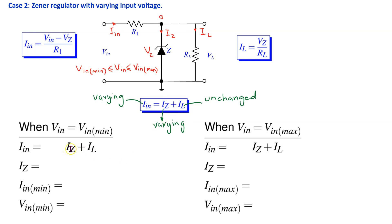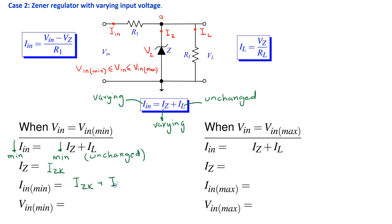To find VIN_minimum: when VIN is at its minimum, IIN is at its minimum. Since IL is unchanged, IZ is forced to its minimum value IZK. Thus IIN_min = IZK + IL, and from Ohm's law: VIN_min = VZ + IIN_min × R1.